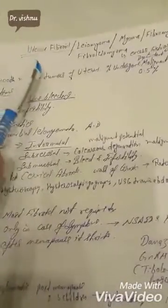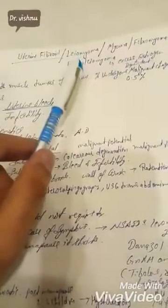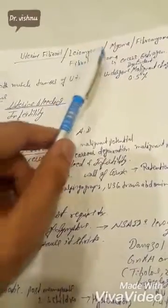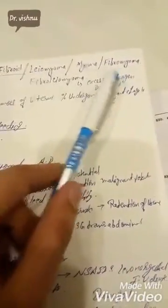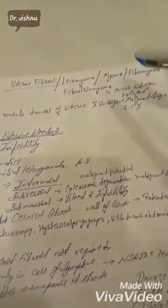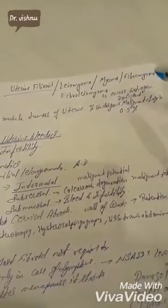Let's start. Uterine fibroids — we can also call them leiomyomas, myoma, fibromyoma, leiofibroma, leioma, or fibroleiomyoma. These are all the same thing — different names for uterine fibroids.